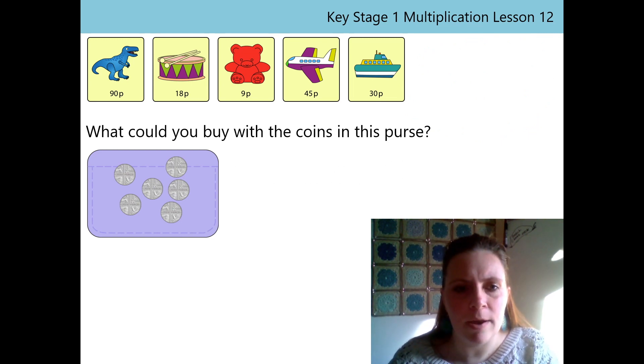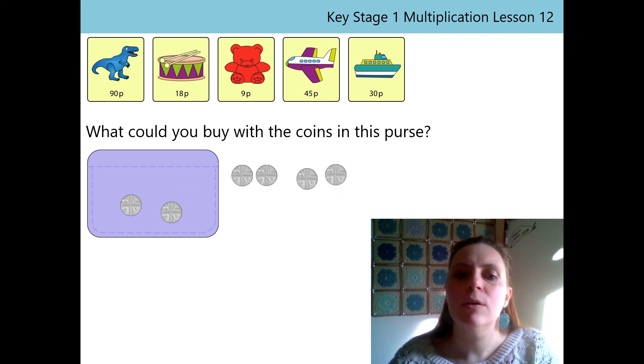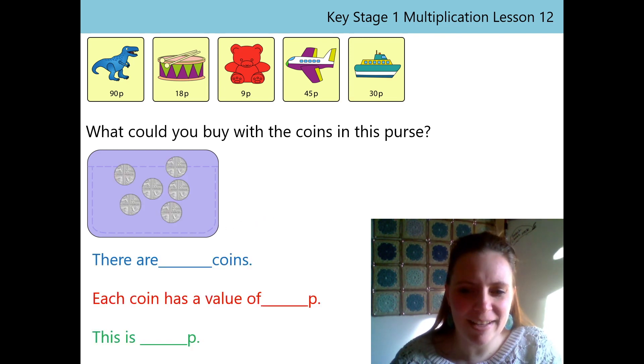I like counting like we just did. I know I've got 6, 5 pennies. But this time I'm going to count in 5s. And as I count in 5s, I'm going to put the word P after it, after each number. Let's do it together. 5p, 10p, 15p, 20p, 25p, 30p.